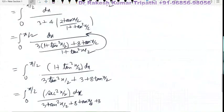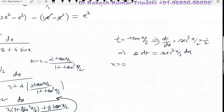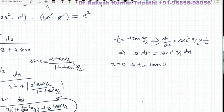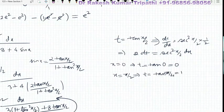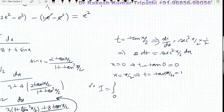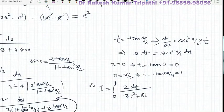The denominator becomes 3t² + 8t + 3. For the limits: when x = 0, t = tan(0/2) = 0; when x = π/2, t = tan(π/4) = 1. Therefore the integral becomes I = ∫ from 0 to 1 of 2dt upon (3t² + 8t + 3).